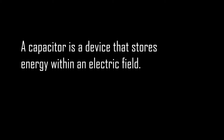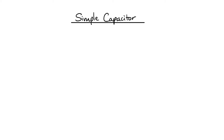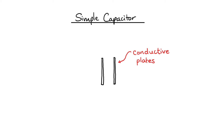A capacitor is a device that stores electrical energy within an electric field. The simplest example of a capacitor is two parallel plates next to each other. In between these conducting plates, they can be separated by a vacuum, an air gap,